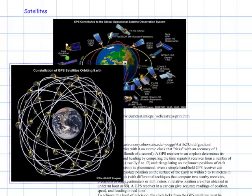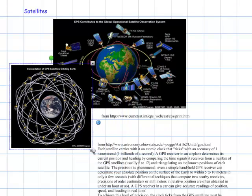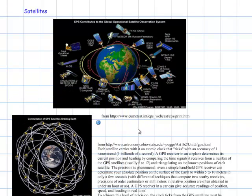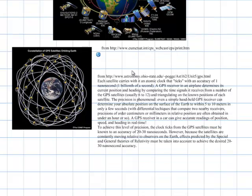And then it says, the one that I copied down here, each satellite carries an atomic clock that ticks with an accuracy of one nanosecond. The GPS receiver in the airplane determines the current position and heading by comparing the time signals it receives from a number of GPS satellites and triangulating on the known positions of each satellite.